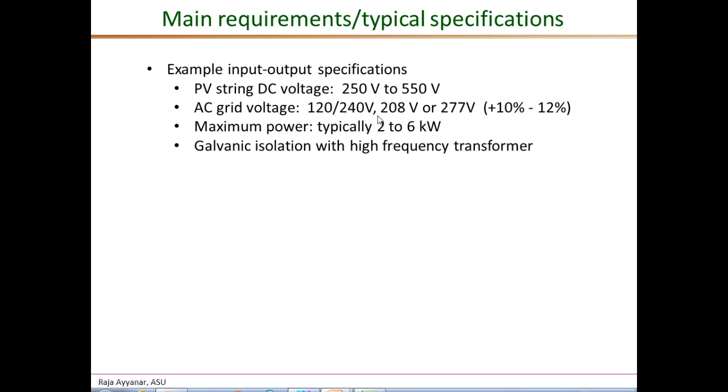Or they can be connected between two phases in a three-phase system, say between A and B, with the line-to-line voltage being 208 volts. Or in a 480 volt three-phase system, they can be connected between the line and neutral, which is 277 volts. A single string inverter should be designed such that it can operate with any of these four AC voltage levels.